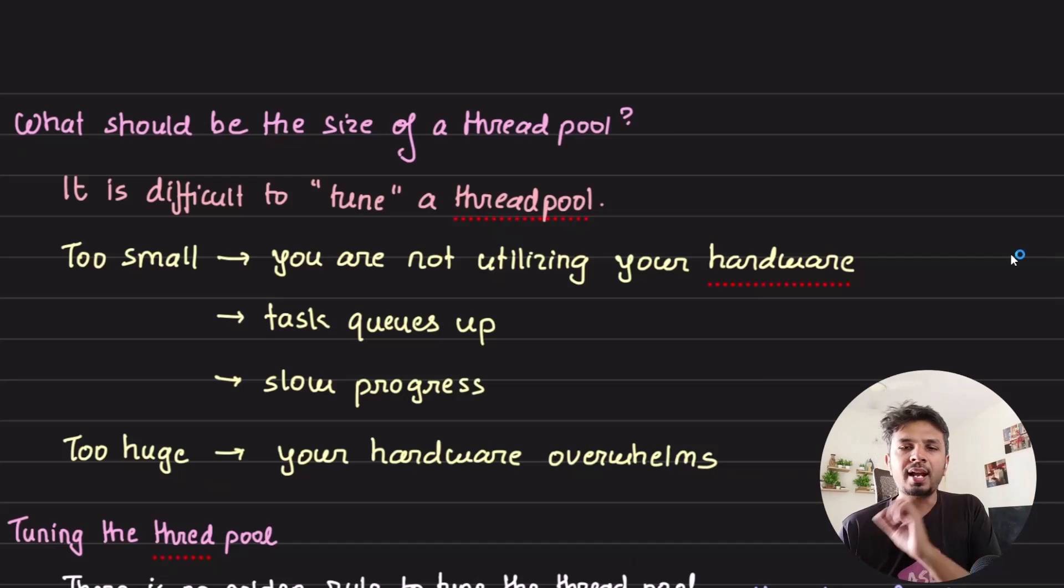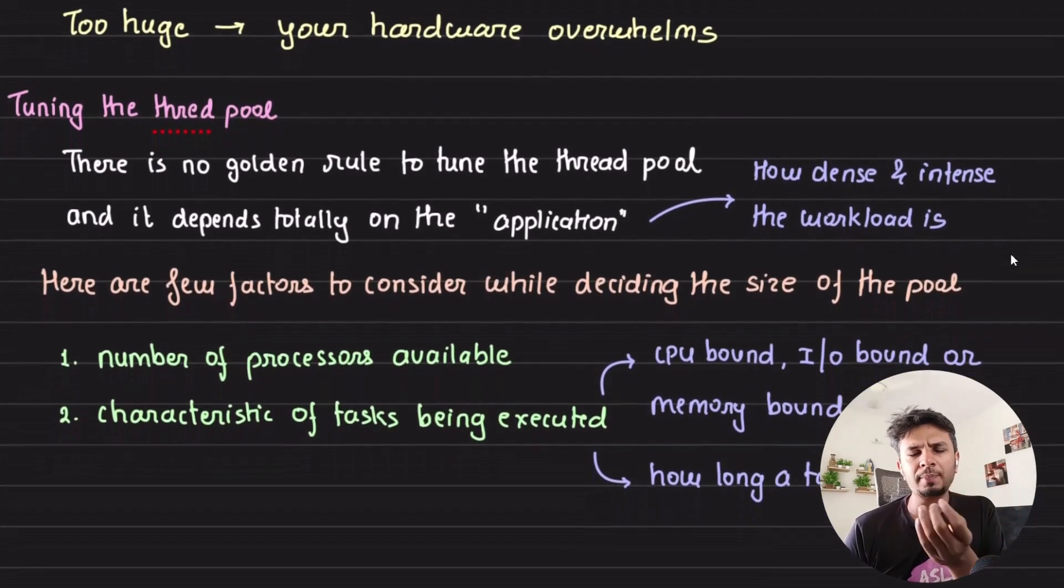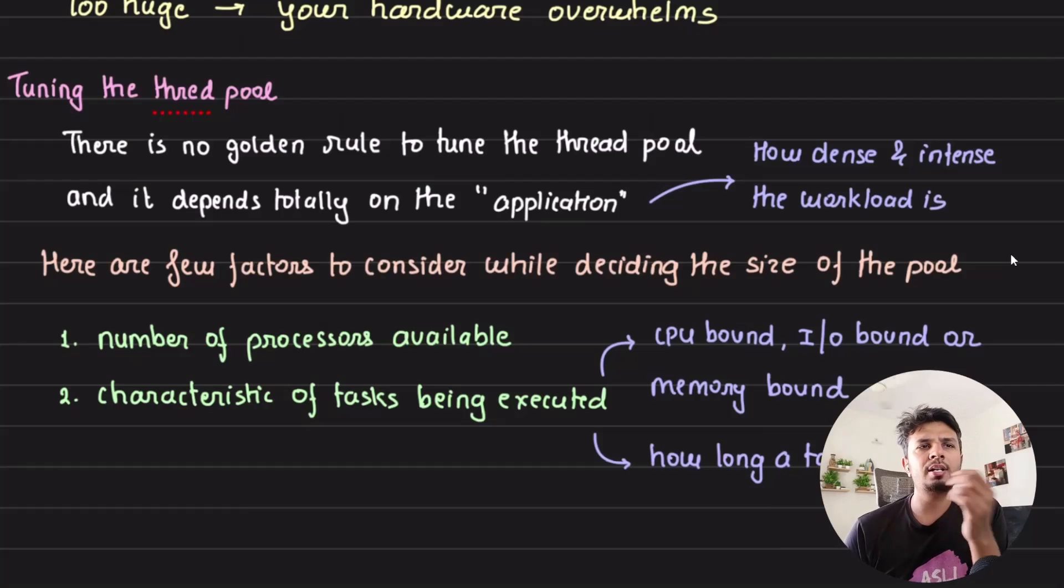How do you tune thread pools? A couple of parameters you can leverage are: number one, the number of processors available on your machine - 2 core, 4 core, 8 core, 16 core, 128 core, whatever you have. More importantly, the kind of work you're doing for each thread.